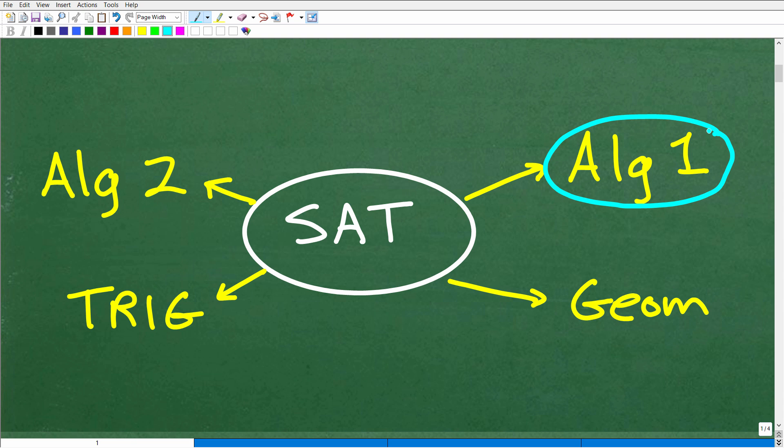Most students take this in the ninth grade in high school. Let me make a typical outline here. So here is the ninth grade - most students take Algebra 1. And then in the tenth grade, most students take Geometry. And then in the eleventh grade, most students take Algebra 2. And then in twelfth grade, most students take Pre-Calculus. Now when do most students take the SAT? Well, you're going to be taking it either at the end of your junior year or in your senior year.